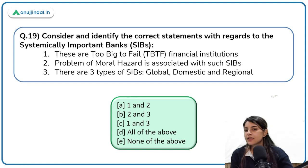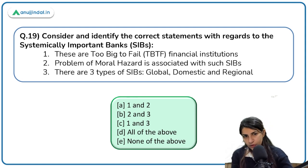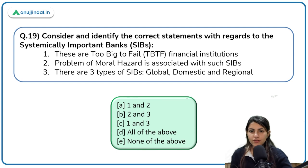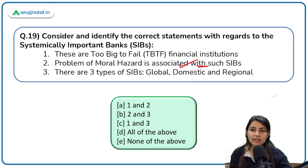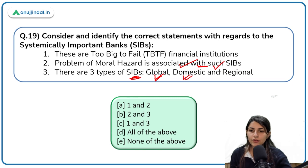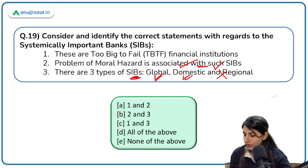Correct statements about systemically important banks: these are too big to fail financial institutions — correct. The problem of moral hazard is associated with these — correct. There are three types of SIBs — incorrect; there are only two types: global and domestic. There is no regional systemically important bank category.